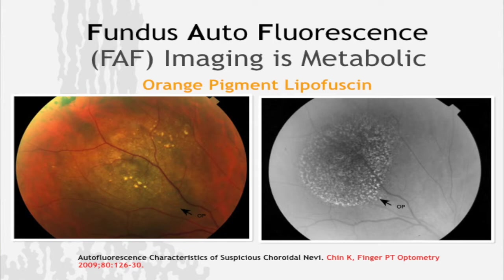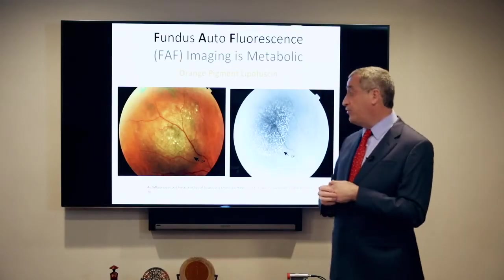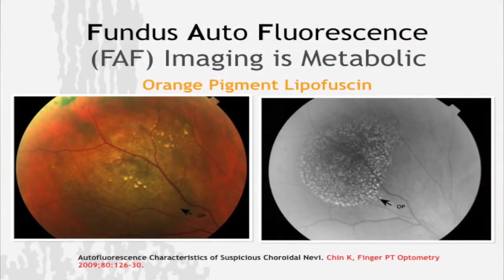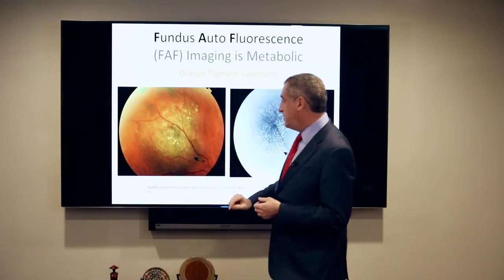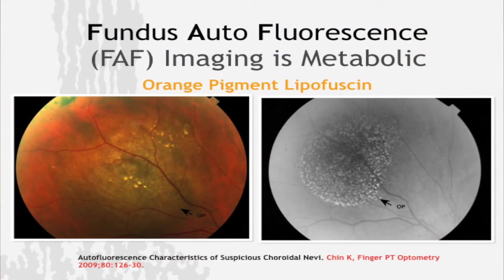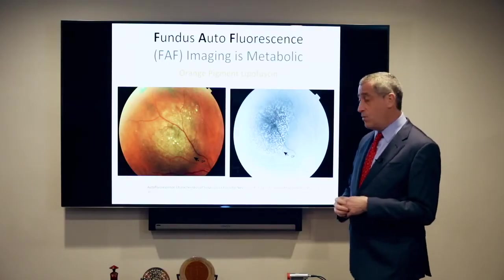With fundus autofluorescent imaging, we look at the tumor with a certain wavelength of light that accentuates lipofuscin, a chemical given off by dying cells. You can see a bit of orange pigment on the surface, but look at the fundus autofluorescent image — you can see dramatically a whole pattern of this chemical, which is one of the diagnostic criteria for distinguishing between a nevus and a choroidal melanoma.